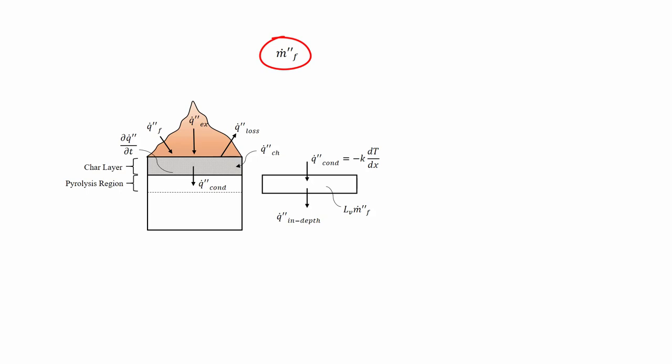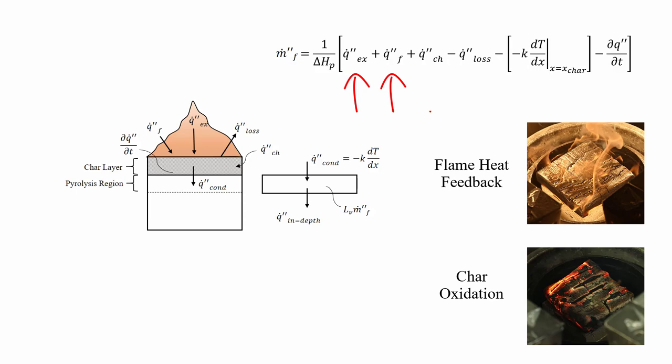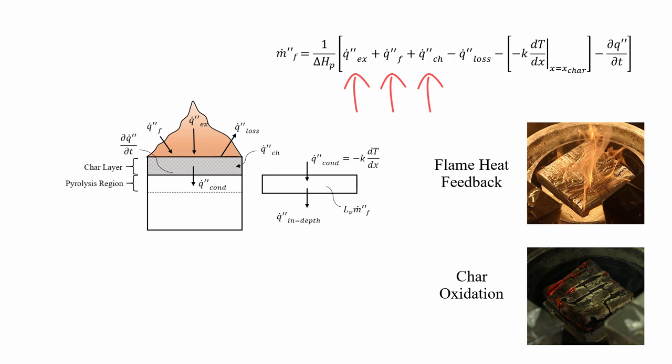We're going to begin by looking at an energy balance over a burning timber specimen. The burning rate or pyrolysis rate of timber is represented as an energy balance over the pyrolysis region. The total heat transfer into the pyrolysis region includes external heating along with the total heat feedback from the flame and heat generated from solid phase oxidation in the char layer, or in other words heat from char oxidation. Heat transfer into the pyrolysis region is then balanced by continued pyrolysis losses at the surface from radiation and convection, as well as conduction from the pyrolysis region further into virgin material.